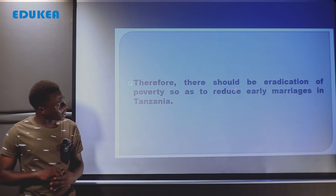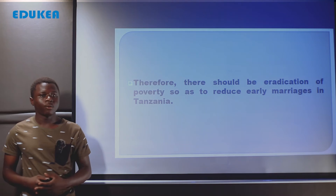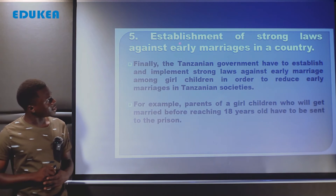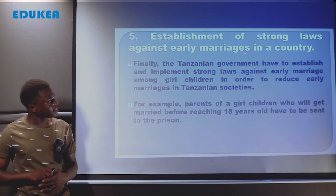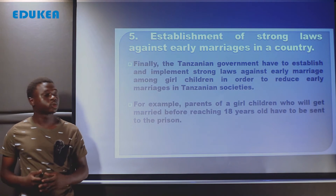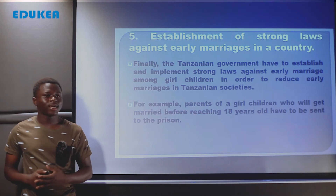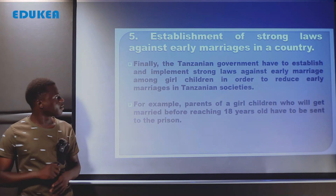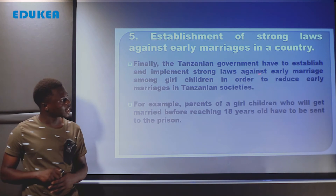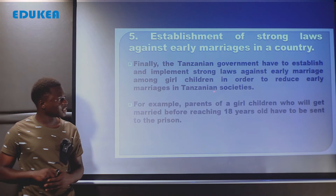Therefore, there should be eradication of poverty so as to reduce early marriage in Tanzania. The fifth point is establishment of strong laws against early marriages in a country. Kuanzishwe sheria ambazo ni strong zifight na ndoa za mapema katika jamii ya Tanzania. The Tanzanian government has to establish and implement strong laws against early marriages among girl children in order to reduce early marriages in Tanzanian societies.